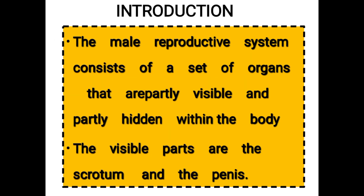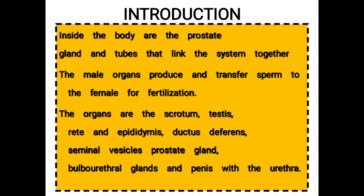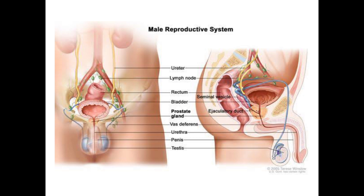The visible parts are the scrotum and the penis, and inside the body — the hidden parts — are the prostate gland and the tubes that connect or link the system together. One of the major functions of the male reproductive system, apart from copulation — which means sexual intercourse — is the production and transfer of sperm to the female for fertilization.